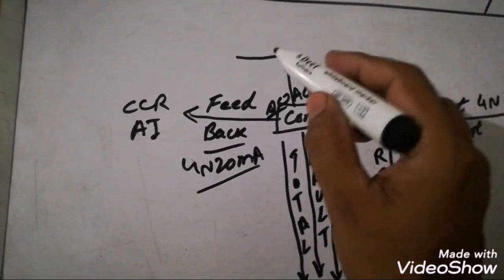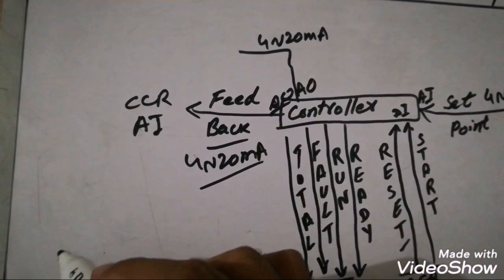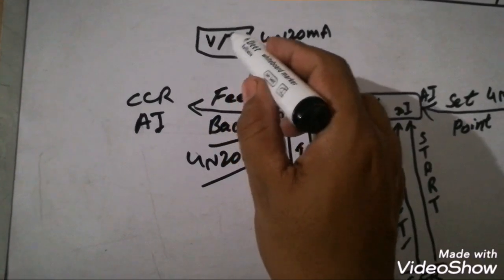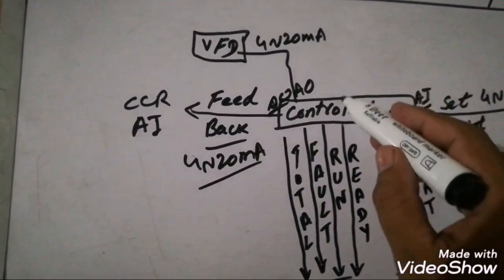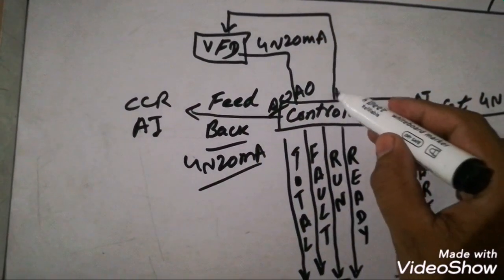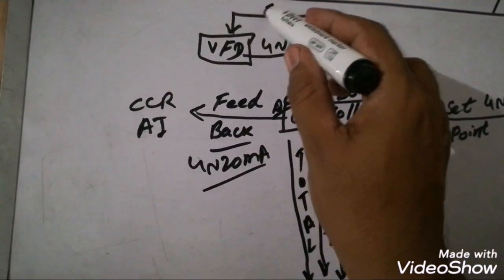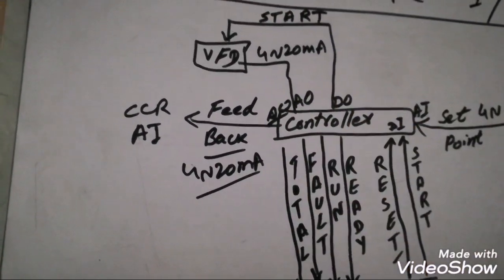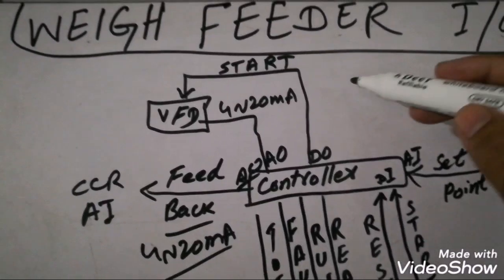Another analog output of the controller is the input to the VFD — this is 4 to 20 mA and is the set point to the VFD indicating how much speed is required to meet the CCR set point. There is also a digital output for the VFD which is the start command — when the operator starts the wave feeder, the controller generates a start command to the VFD and the motor is started.